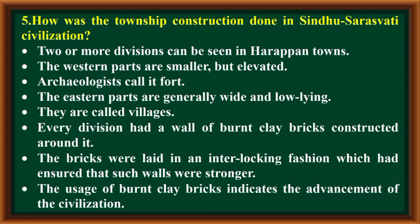How was the township construction done in Sindhu Saraswati Civilization? Two or more divisions can be seen in Harappan towns. The western parts are smaller but elevated — archaeologists call it a fort. The eastern parts are generally wide and low-lying, and they are called villages. Every division had a wall of burnt clay bricks constructed around it. The bricks were laid in an interlocking fashion, which ensured that such walls were stronger. The usage of burnt clay bricks indicates the advancement of the civilization.